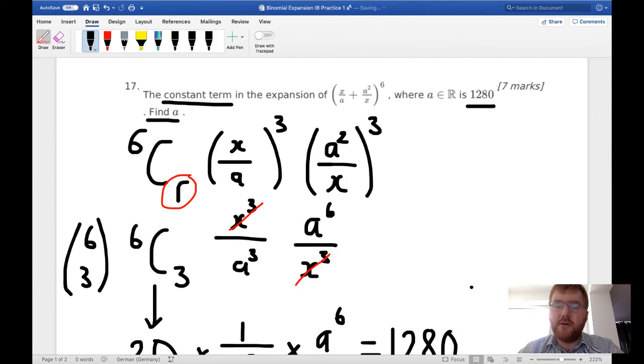So it's a 7 mark question. It's quite detailed, but the method for these kind of questions is the same. You try and get the powers here. These two must add up to 6 here, 4 and 2, or 5 and 1, or 6 and 0, so that these things cancel here to give us a constant term.